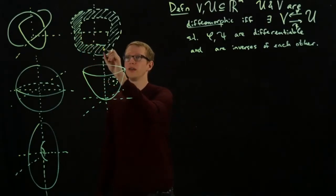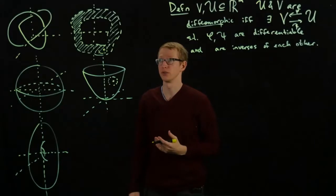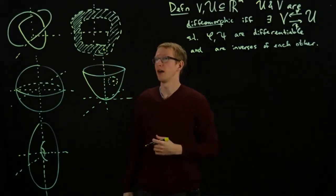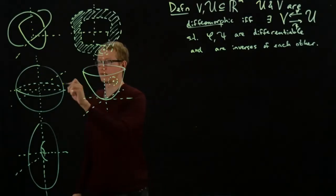Here, around any point, we can find, because this is by definition an open subset of R2, we can just choose the diffeomorphism to be itself, because it's already an open subset of R2.